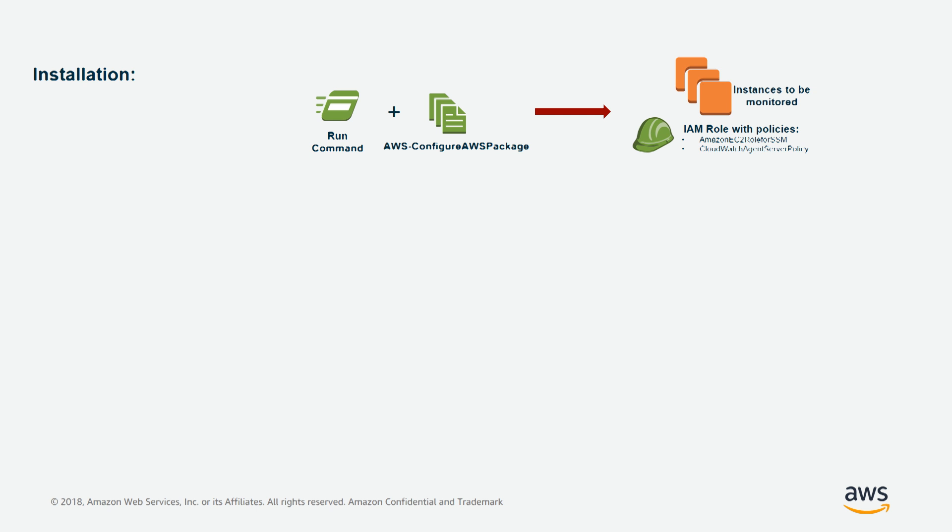For installation, we are going to use AWS Systems Manager Run Command with the AWS Configure AWS Package document. This document can be used to install AWS packages, including Unified CloudWatch Agent. Instances that will execute Run Command need to have an IAM role with the following policies: first, Amazon EC2 Role for SSM, which enables the instance to communicate with the AWS Systems Manager API, allowing Systems Manager to install or configure CloudWatch Agent. Second is CloudWatch Agent Server Policy, which provides permission for reading information from the instance and writing it to the CloudWatch service.